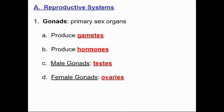First, some general terminology. Gonads are the primary sex organs. They produce the gametes, which are the sex cells — so they produce eggs and sperm. They can also produce hormones. For males, we're talking about testes; singular would be testis or testicle. And then ovaries for females.